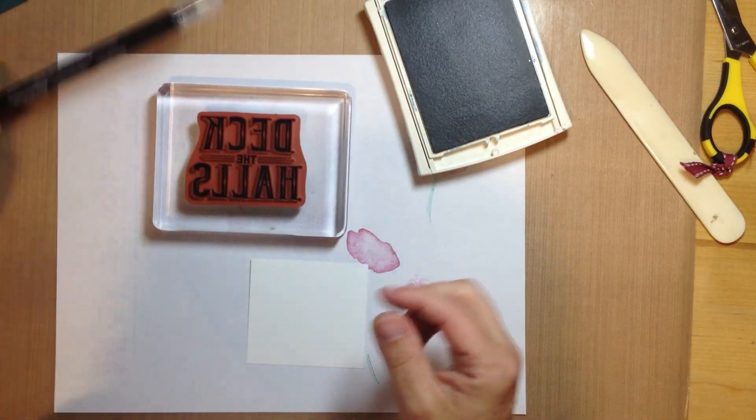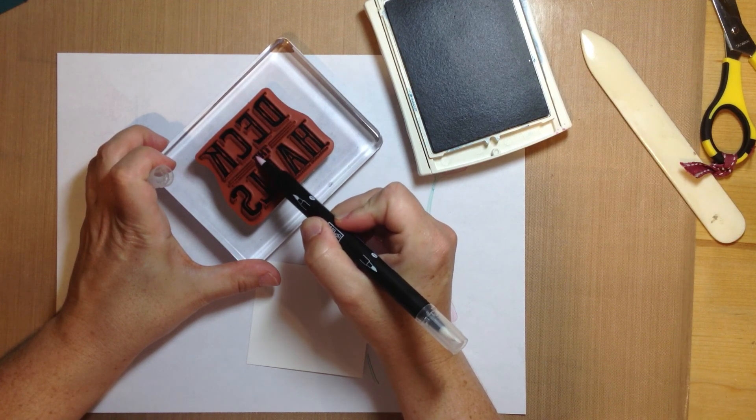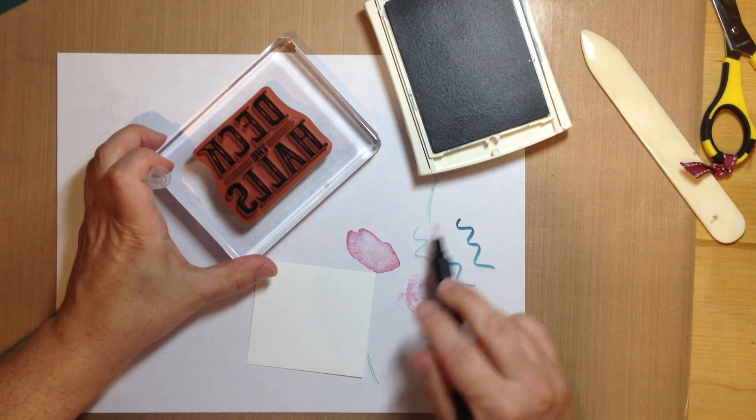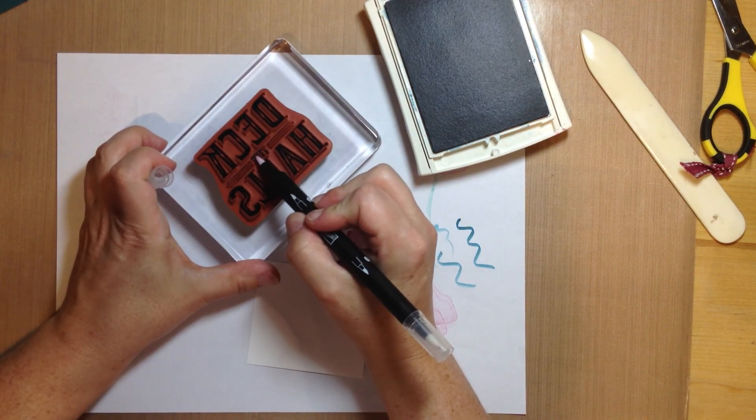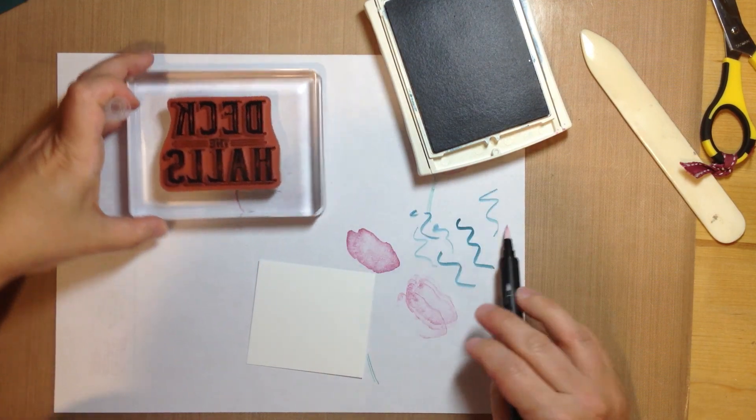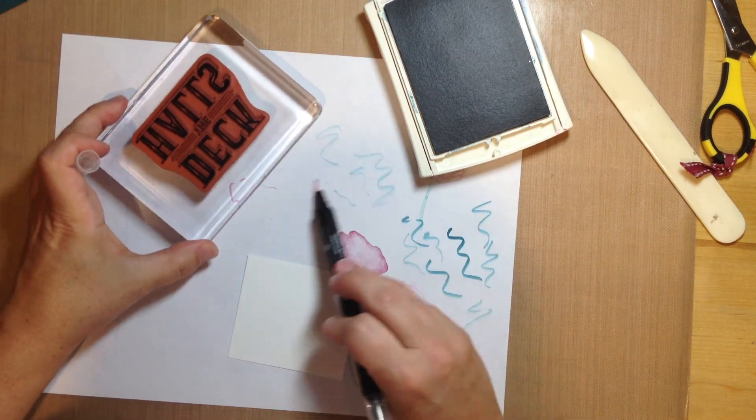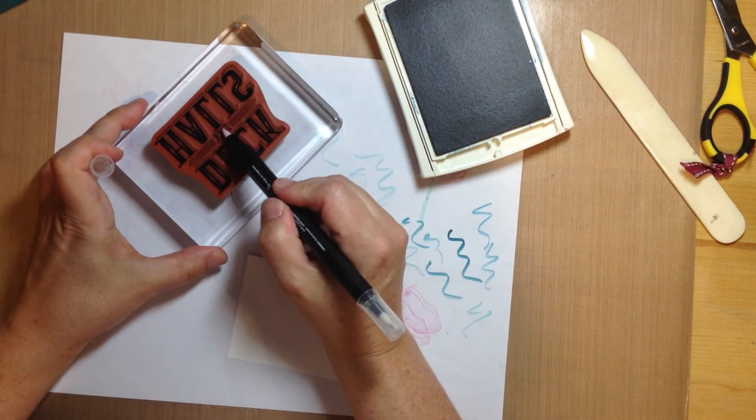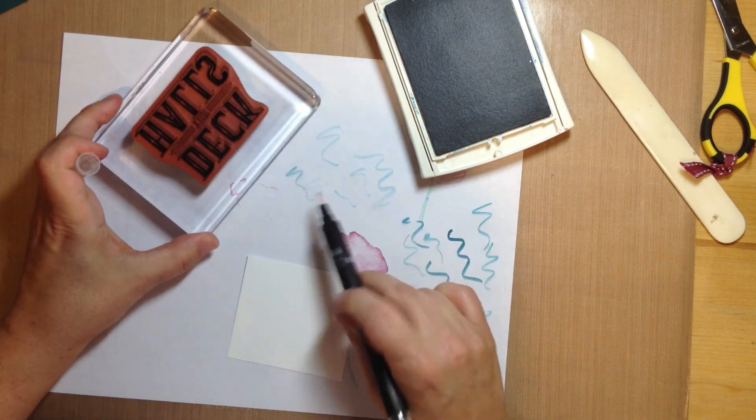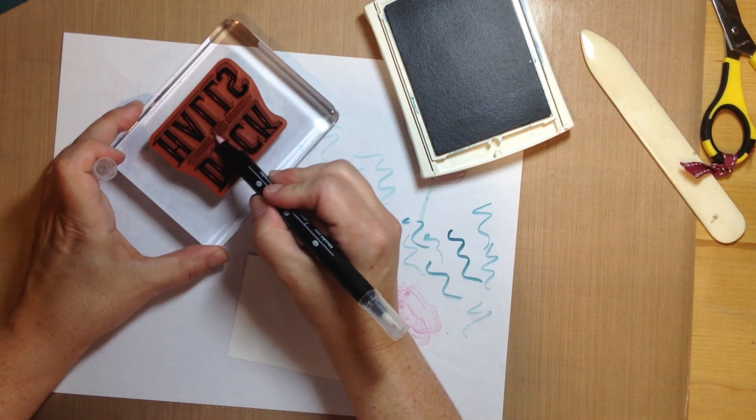And then I'm going to take my blender pen and remove the ink from the... And this is a dark color, so sometimes it takes a bit to remove it, to remove all the ink. So I'll just keep running it on my scrap paper until most of the ink is gone and then I'll go back over it again. One more time.